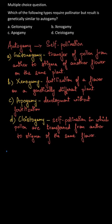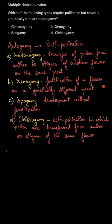Let's start with the first one, which is geitonogamy. Geitonogamy is the transfer of pollen from anther to stigma of another flower on the same plant. The second one is xenogamy, which is fertilization of a flower on a genetically different plant.